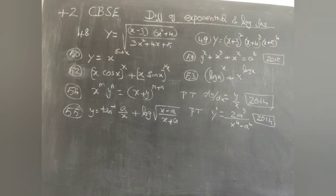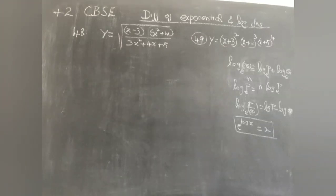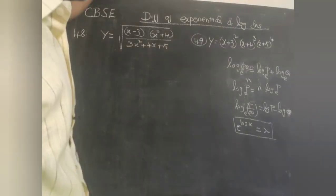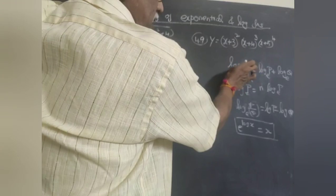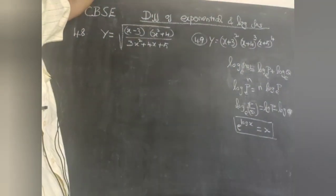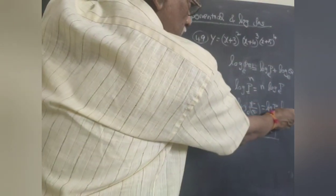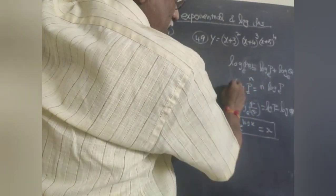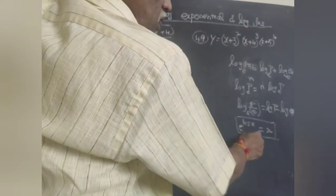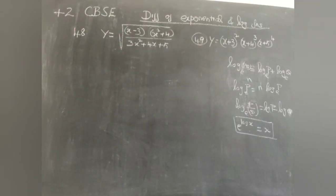All these are based on logarithmic properties, so before we go to those problems, I will briefly explain the properties. log(pq) = log p + log q. As far as calculus is concerned, the base is e, called natural logarithm, though it may also be base 10. log(p/q) = log p - log q. log(p^n) = n·log p. And e^(log x) = x.